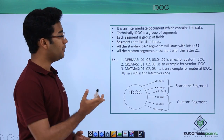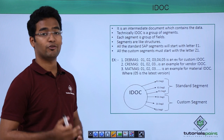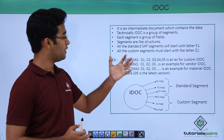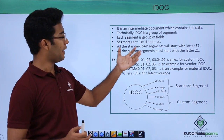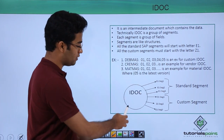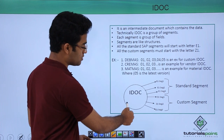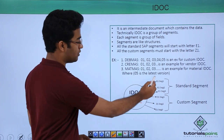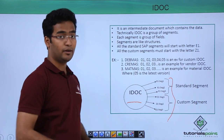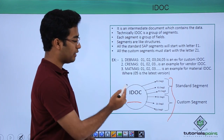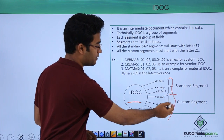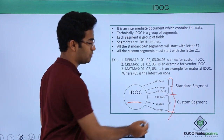IDOCs are nothing but an intermediary document which contains data. Technically speaking, the IDOC is a group of segments. This is an IDOC, and this is a group of segments here, and these segments are divided into two — that is standard segment and custom segment.